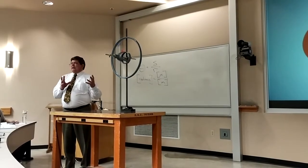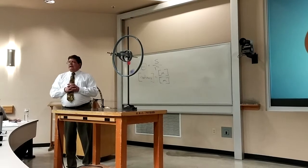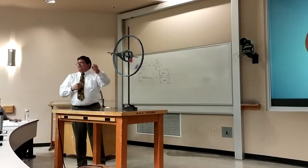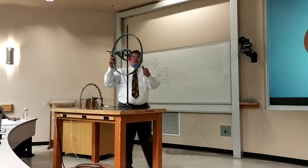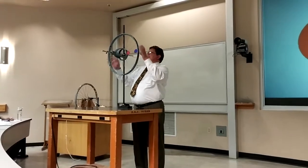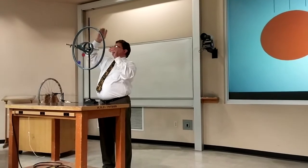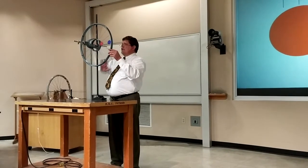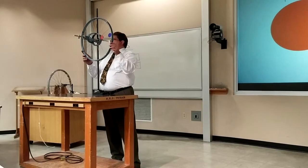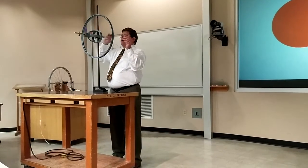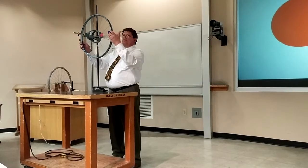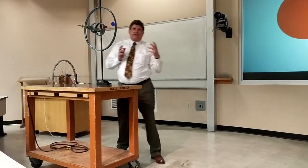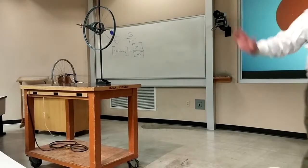Now, we're going to define a new kind of velocity. It's not how far down the road you get each second — it's how far around in radians you get each second. Because this wheel is rigid, every part of it goes around two pi radians in exactly the same amount of time. That means every point on the wheel — the blue dot, the red dot, a point on the hub, a point on the rim — all have the same rotational velocity.